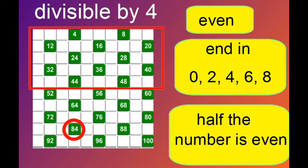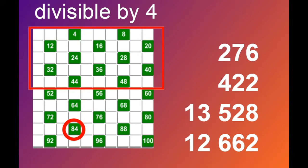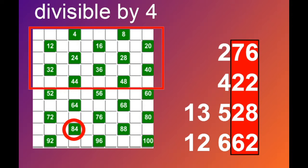What about numbers over 100? Let's see these numbers: 276, 422, 13,528, 12,662. Actually, it's quite easy — we simply take the last two digits. If that number is divisible by 4, then the whole number is divisible by 4. 276: I can see that 76 is divisible by 4. 422: I can see that 22 is not divisible by 4. 13,528: 28 is divisible by 4. And finally, 12,662: that's not divisible by 4. So I can tell if numbers are divisible by 4 by just looking at the last two digits.